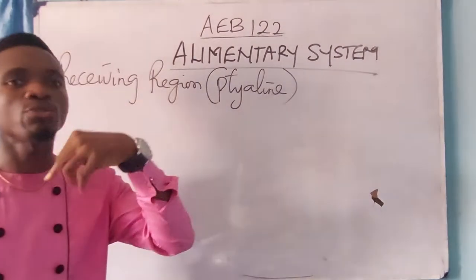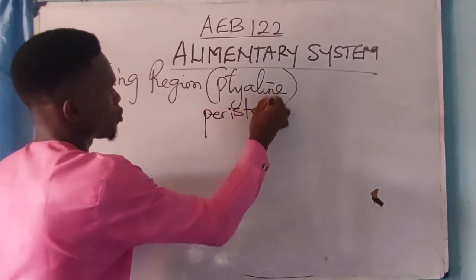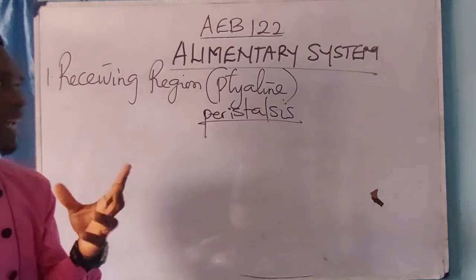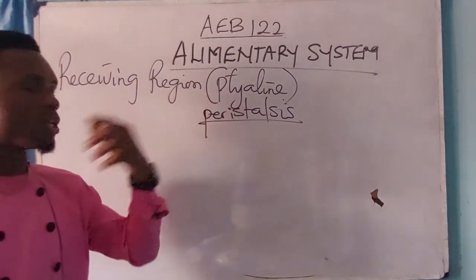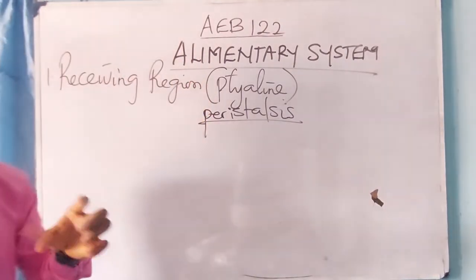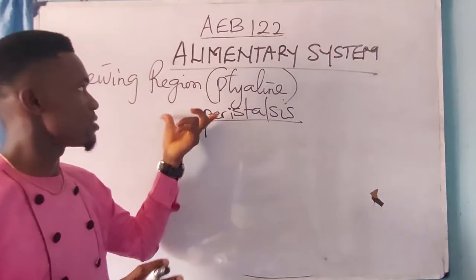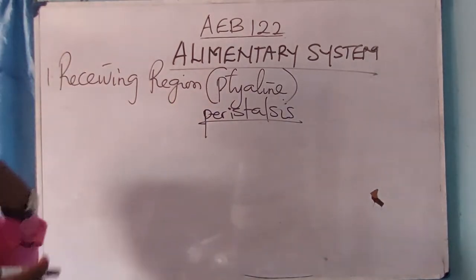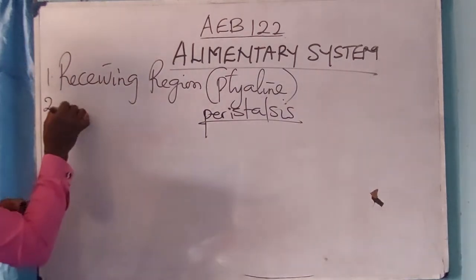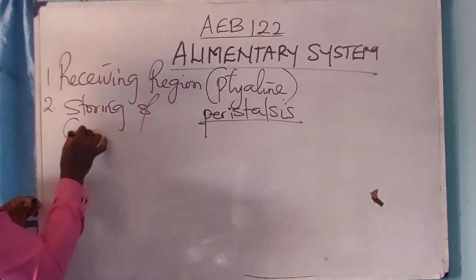The food then enters the esophagus via peristalsis. The movement of food in the esophagus is called peristalsis. So the two structures in the receiving region are the mouth and the esophagus. The tube that connects the mouth to the esophagus is called the pharynx, and the tube that connects the pharynx to the stomach is called the esophagus. The movement of food in the esophagus is called peristalsis.